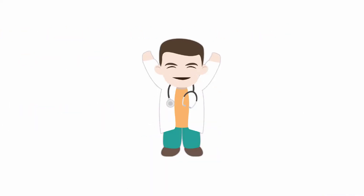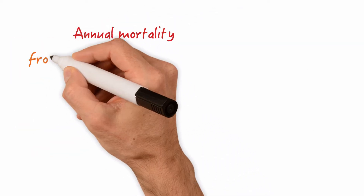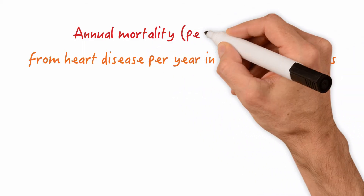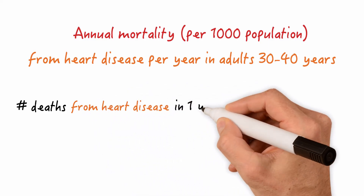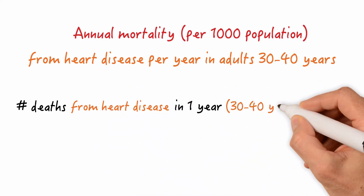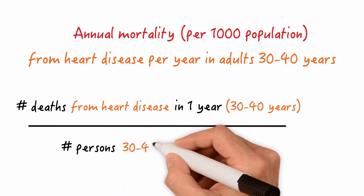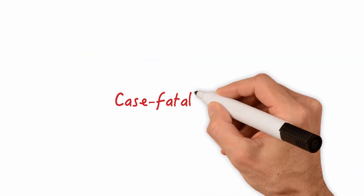Now let's combine the two previous approaches and calculate the annual mortality from heart disease in adults 30 to 40 years of age per 1,000 population. We take the number of deaths from heart disease in one year that occurred in the 30-to-40 age group, divide by the number of persons aged 30 to 40 at mid-year, and multiply by 1,000. Now let's turn to case fatality rate.